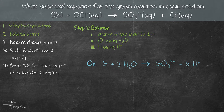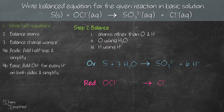Let's move on to the reduction equation. We're going to do the same thing. Starting by balancing Cl — it's already balanced because both sides have 1 Cl. Then we move on to oxygen: we have 1 oxygen on the left and no oxygen on the right, so we add 1 H₂O on the right-hand side. For H, we have no H on the left and 2 H on the right, so we add 2 H⁺ on the left-hand side. With that, we're done with step 2.